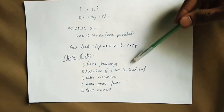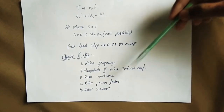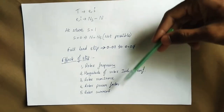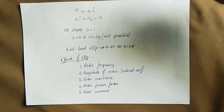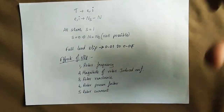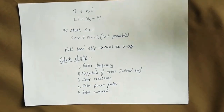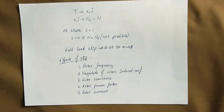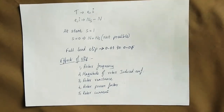The five factors affected by slip are: rotor frequency, rotor induced EMF, rotor reactance, rotor power factor, and rotor current. The slip determines all five of these factors equally. The effect of any change in slip results in a corresponding change across these quantities.